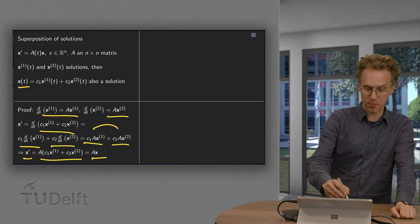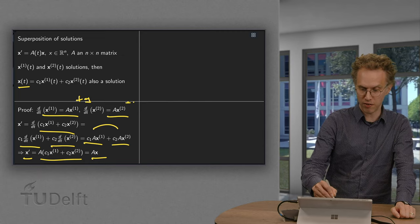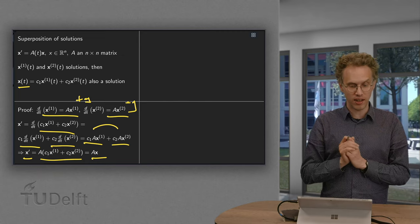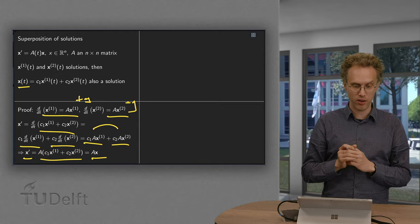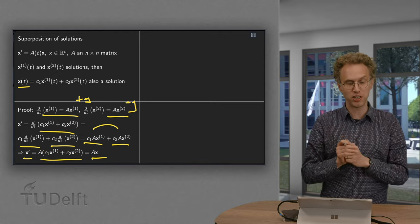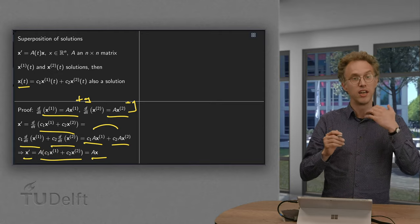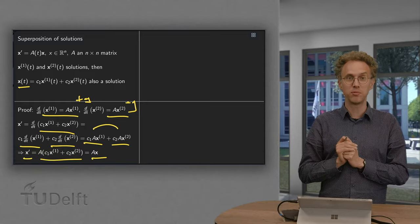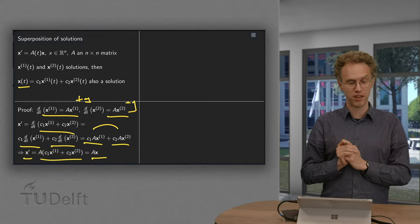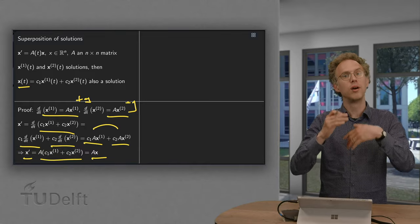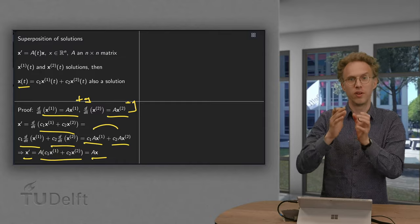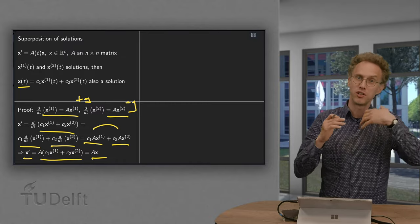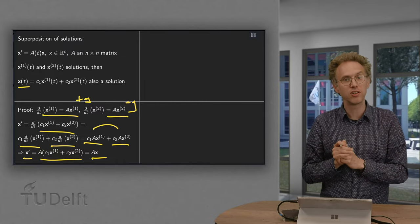If we would have say plus g over here and a plus g over there, then the linear combination, the d/dt of the linear combination would also give us a c1 times g plus c2 times g. So then we would have x prime equals A times x plus c1 g plus c2 g. So we would have other rubbish. So then the linear combination is not a solution.